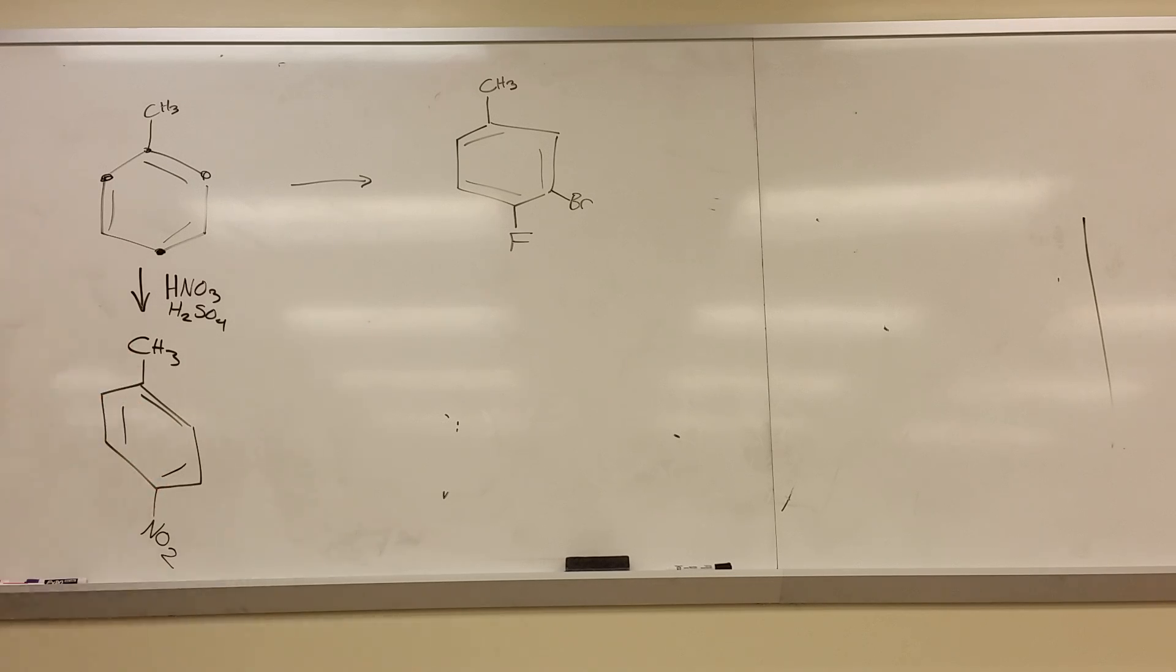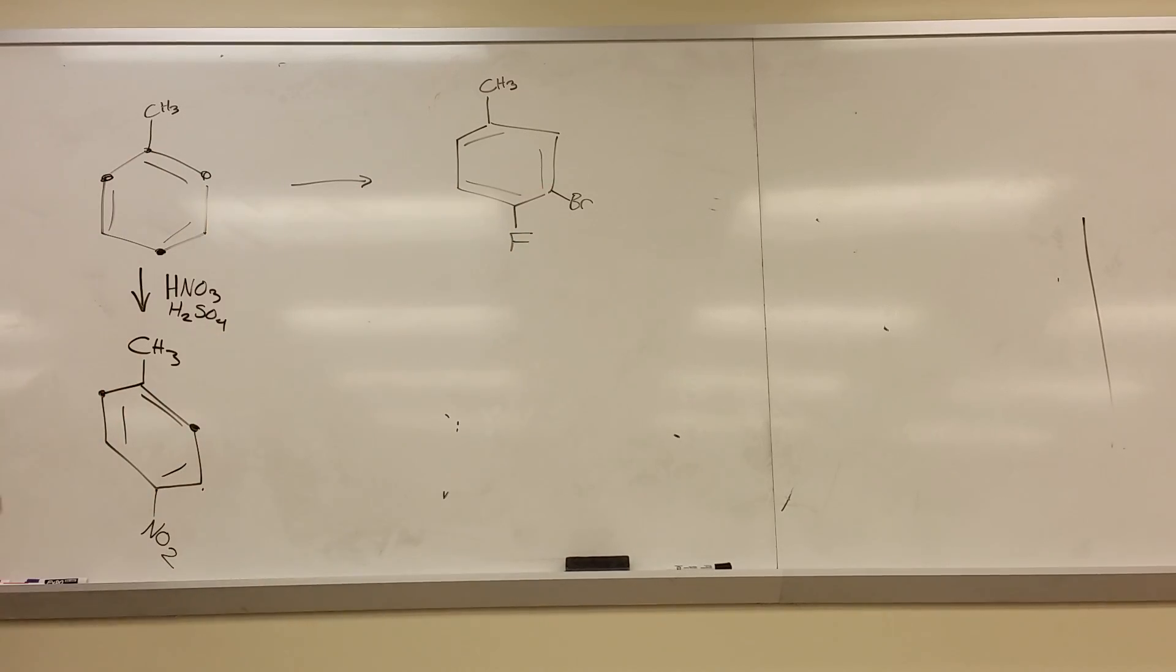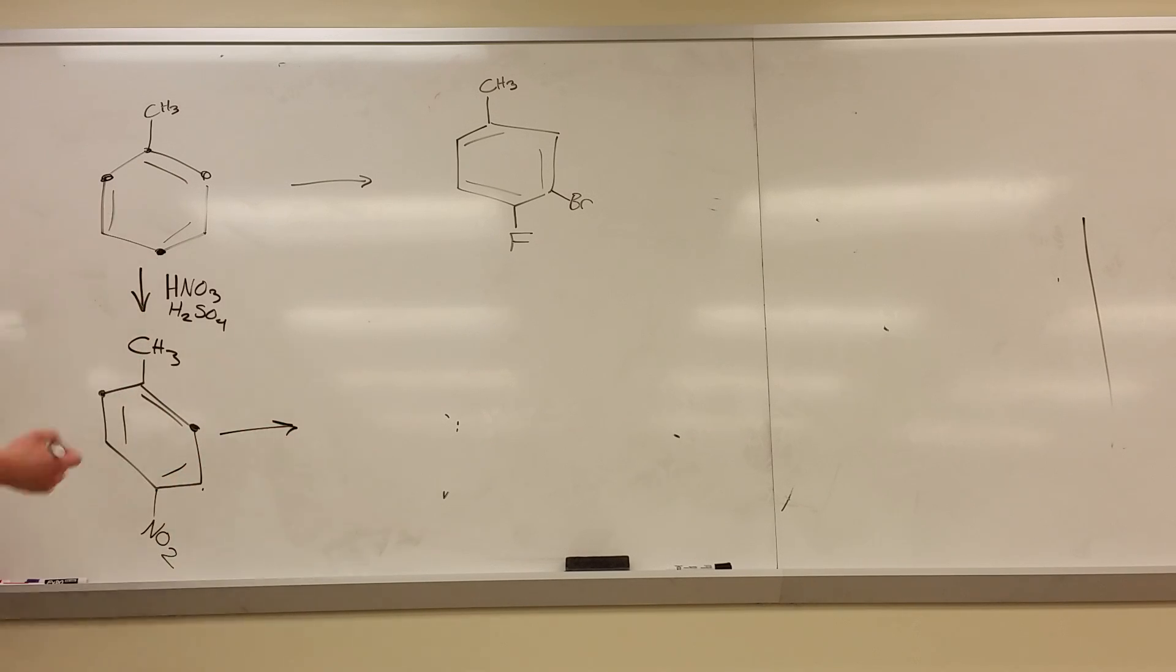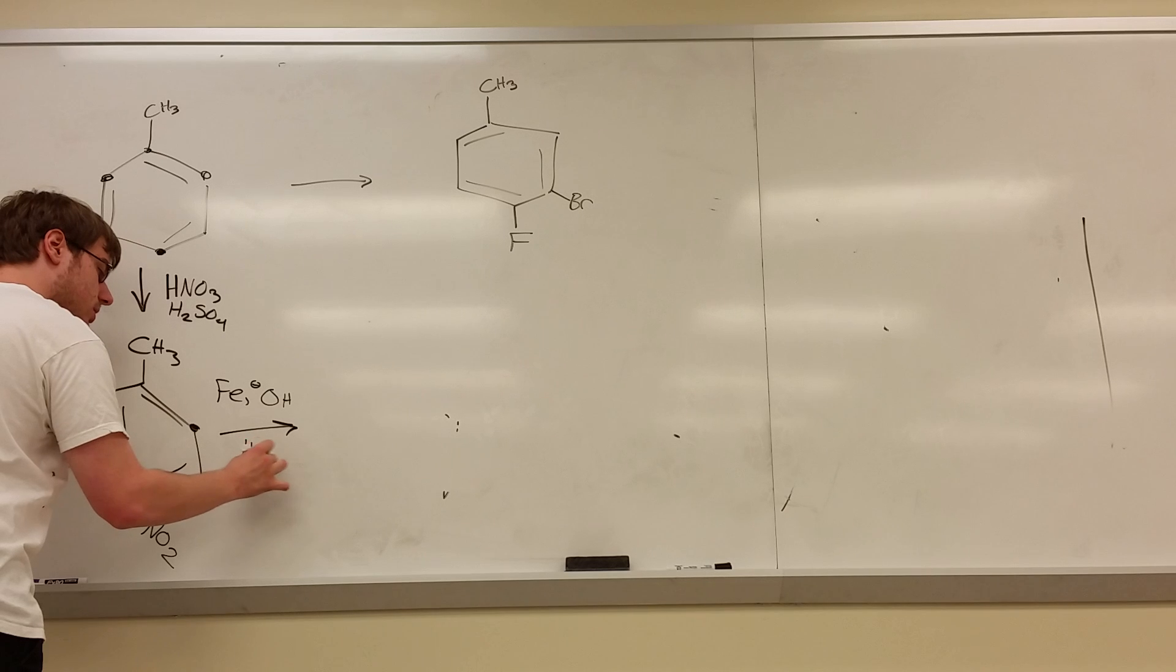Now let's think, can we add the bromine now? Well, CH3 is still an ortho-para director so it would want to direct here or here. NO2 is a strong withdrawing group which means it is a meta-director, which means 1, 2, 3 it would also direct to those positions. So we still don't have a way of getting the bromine in the position we want, so don't add the bromine yet. Let's go through the next step. Let's turn that NO2 into NH2 using Fe OH- and then some H2O step 2.